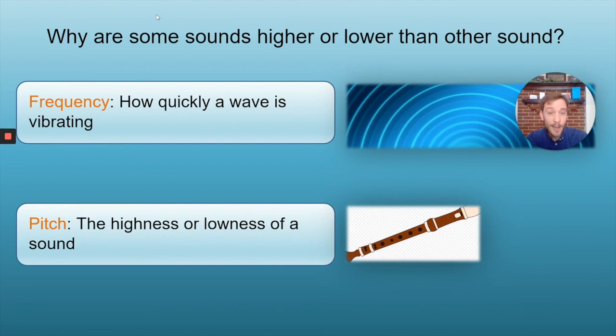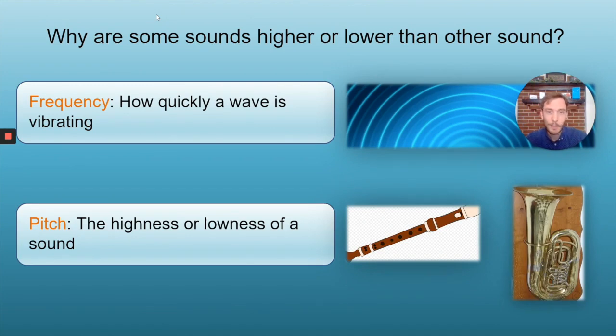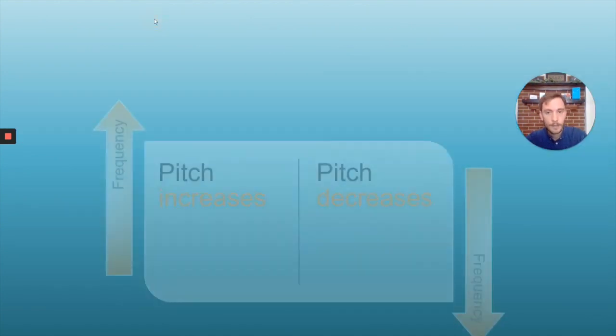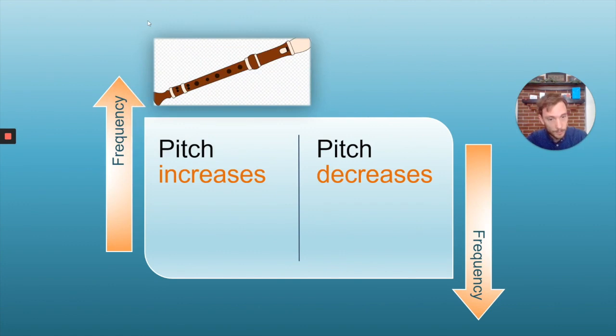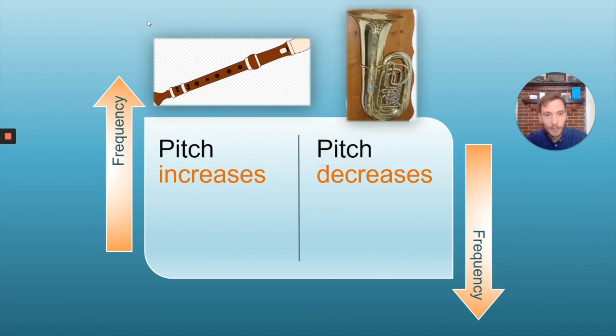When you think of an instrument with a high pitch, you could think of a recorder. An instrument that produces low pitch would be like a tuba. So as a wave vibrates quickly, we can say that its frequency is high. High frequency waves create high pitch sounds like that of a recorder. If the wave is vibrating slowly, we say that it has a low frequency, and low frequency waves create low pitches, low pitch sounds like that of a tuba.